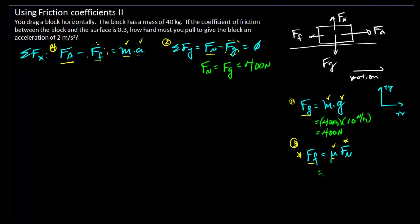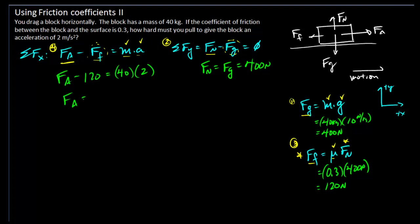Going to our friction equation: the friction force is going to be equal to the coefficient of friction of 0.3 times our normal force of 400 Newtons. This gives a friction force of 120 Newtons. We can then go to our acceleration equation in the x direction. So our applied force minus that friction force of 120 is going to equal the mass of 40 times the acceleration of 2 meters per second squared. The applied force must be equal to 80 plus 120, which is 200 Newtons.